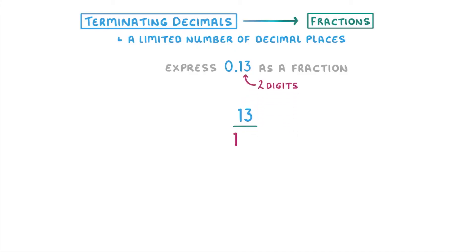And because there are only two digits after the decimal point, the 1 and the 3, we're going to have to add two zeros, so that we get 13 over 100 as our fraction.